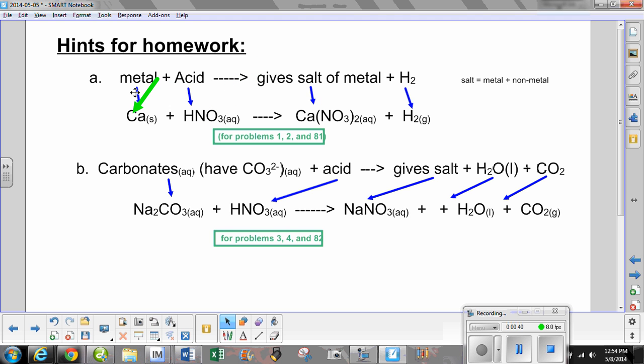Now what happens is this is single replacement. So the calcium is going to go with the nitrate because calcium forms a positive ion, nitrate is a negative ion. You have two nitrates because calcium is a 2 plus ion and nitrate is a 1 minus. So they have to balance out to zero. The other part of that is going to be hydrogen as a gas.